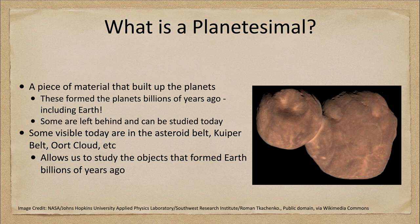There's one more we can look at: the object known as Arrokoth, out in the Kuiper belt. This was studied by the New Horizons spacecraft, which passed by Pluto in 2015 and was then redirected out to study Arrokoth. It's another example of that type of leftover object. The material we find out in the Kuiper belt is generally more icy and was likely what formed the outer planets. So studying the asteroid belt helps us learn about material that formed Earth, while the Kuiper belt helps us study what formed the outer planets — Jupiter, Saturn, Uranus, and Neptune.